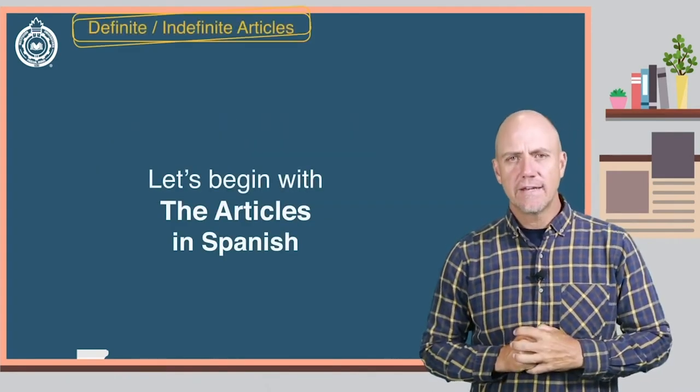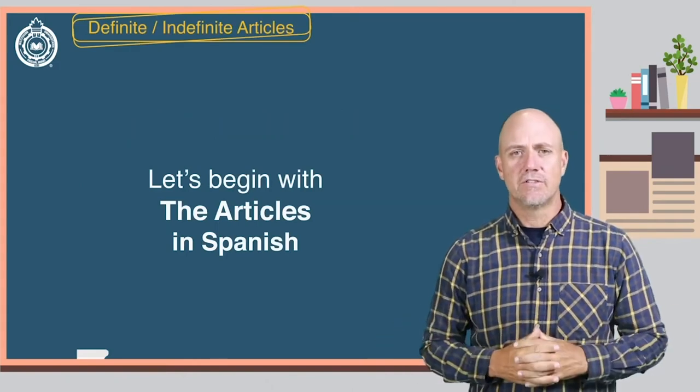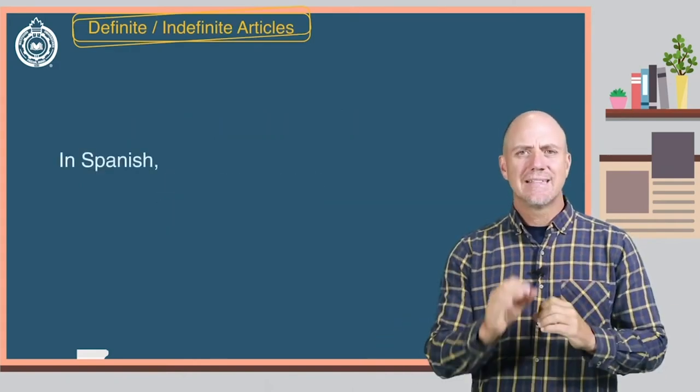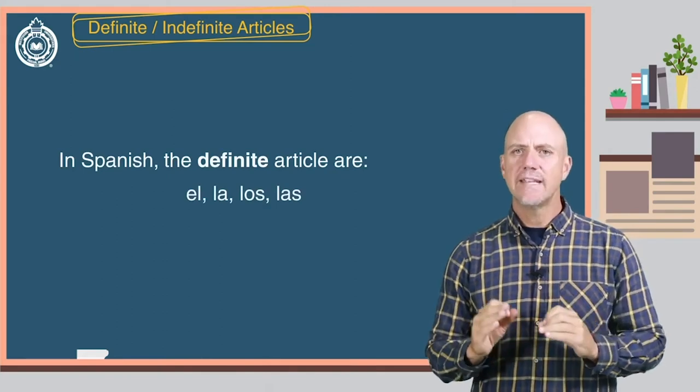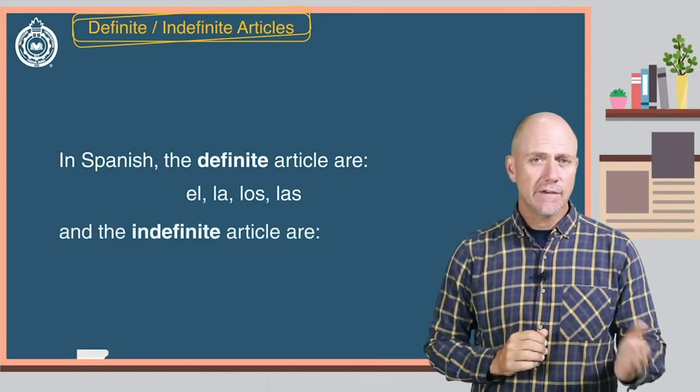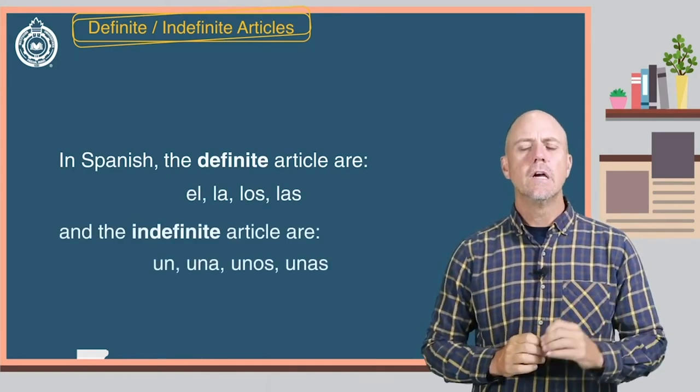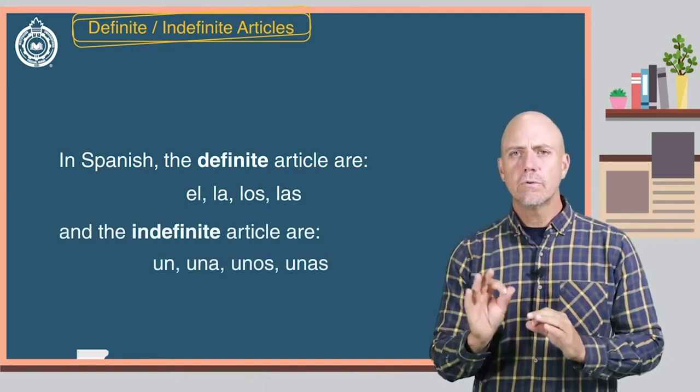Let's begin with what you already know, the articles in Spanish. In Spanish, the definite articles are el, la, los, and las, and the indefinite articles are un, una, unos, and unas.